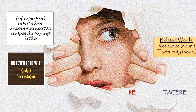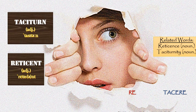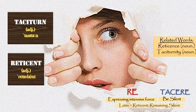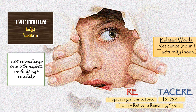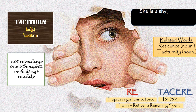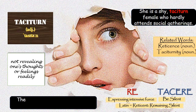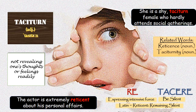Then we have the word RETICENT, which most people consider an exact synonym of taciturn. Reticent is indeed quite similar in meaning — the word literally means to remain silent. A reticent person does not reveal his or her thoughts or feelings readily. This might be because one is habitually silent like a taciturn person, but it might also be when one is exercising caution or restraint in disclosing one's inner self. For example, the actor is extremely reticent about his personal affairs — actors are generally expressive, but they can be described as reticent when they refuse to make certain aspects of their life public.